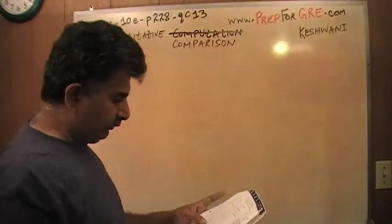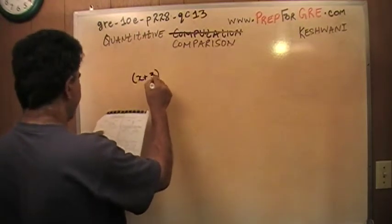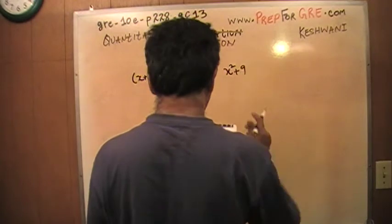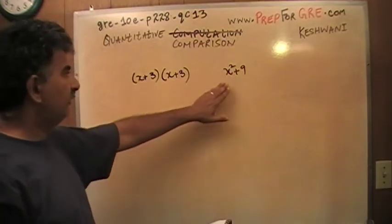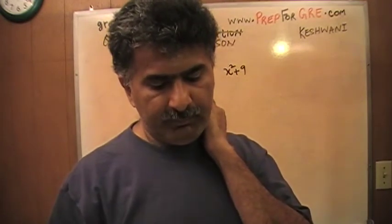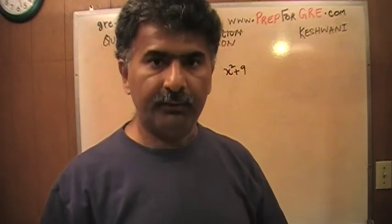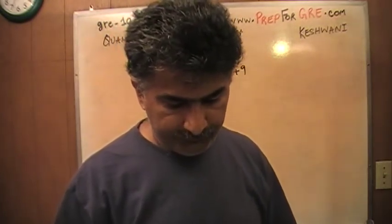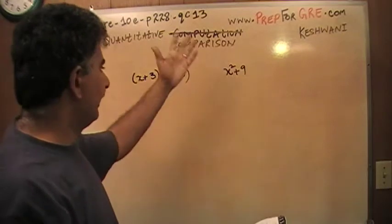We are being asked to compare two quantities: (x+3) times (x+3) versus x squared plus 9. When this exam was given, only 31 percent of the people got this question right — almost 70 percent, seven out of ten people, got it wrong. The reason they're probably getting it wrong is they're thinking this is x squared and this is 9.